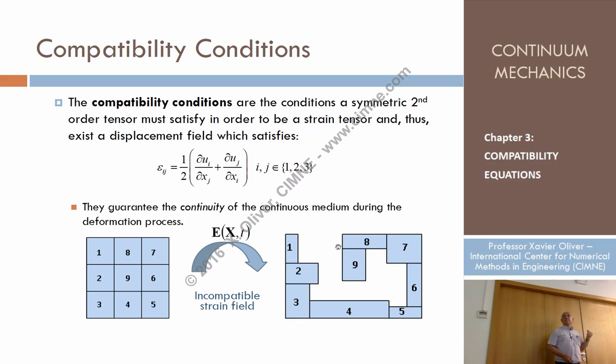So we assume that the problem is continuous, so that particle one, that originally before the deformation was surrounded by particles two, nine, and eight, after the deformation should also be contiguous to particles two, nine, and eight. And that is not the case.